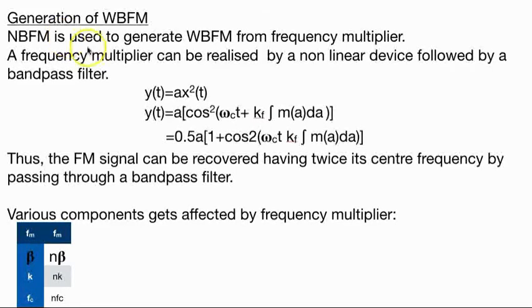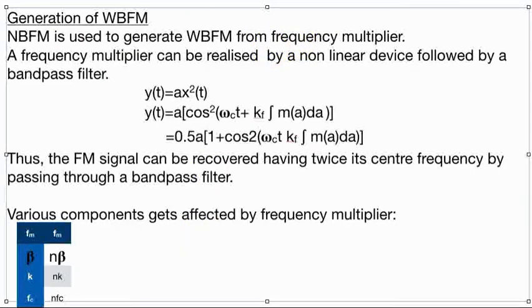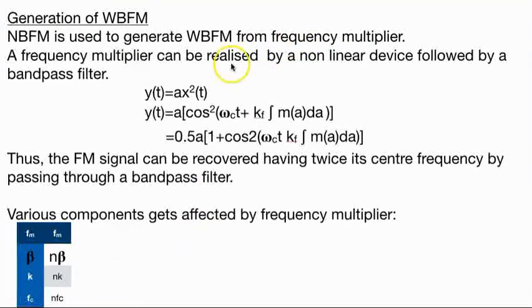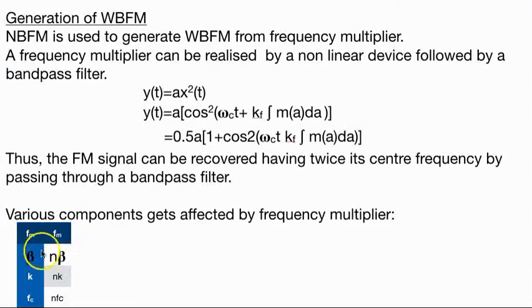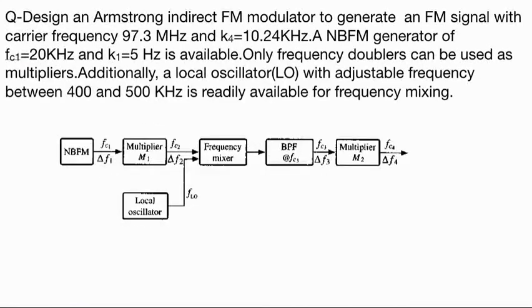For generation of wideband signal, we use a frequency multiplier. Frequency multiplier is a nonlinear device where the signal is squared and twice of that frequency, twice of its center frequency by passing through a bandpass filter. In multiplication, we have beta equals N times beta, k equals N times k, and fc equals N times fc.